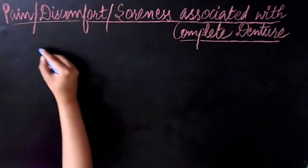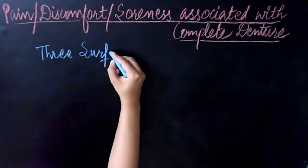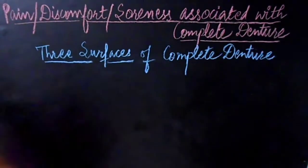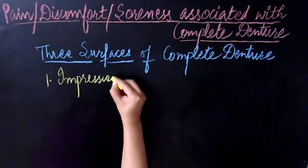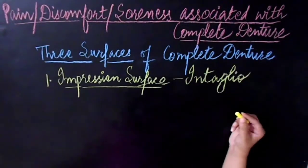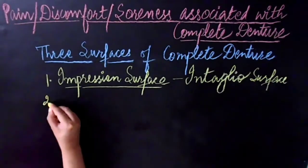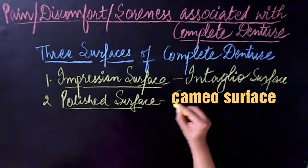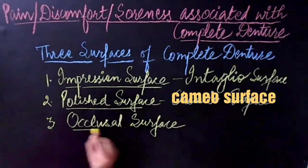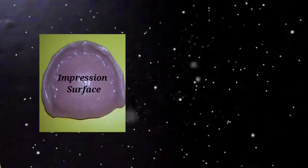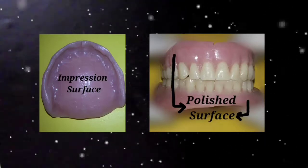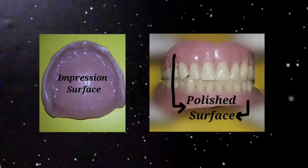In this video I'll tell you how to deal with pain, discomfort, or soreness associated with the complete denture. First I'd like to tell you about the three surfaces of the denture. The first is the impression surface or fitting surface, also known as the intaglio surface — the surface that contacts oral tissues. The second is the polished surface, also known as the cameo surface. The third is the occlusal surface of the denture teeth. You can see these labeled in the picture.